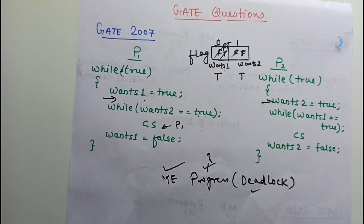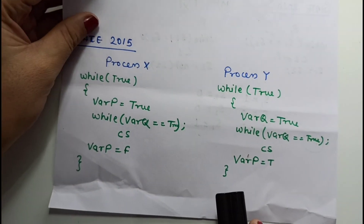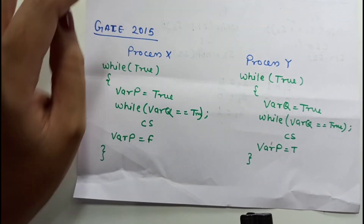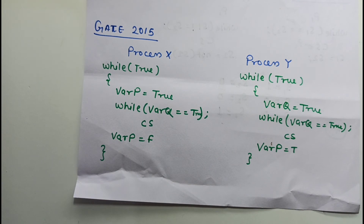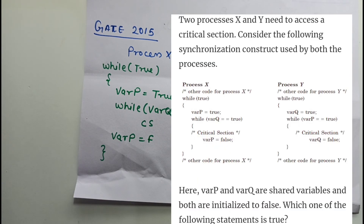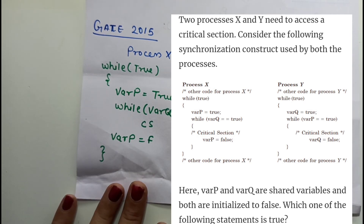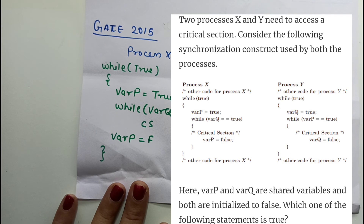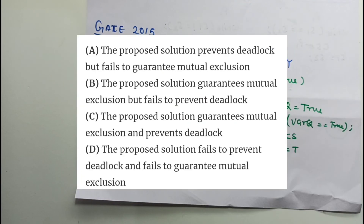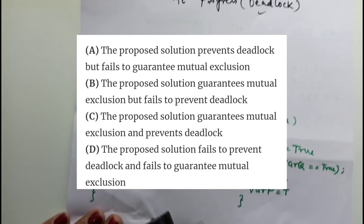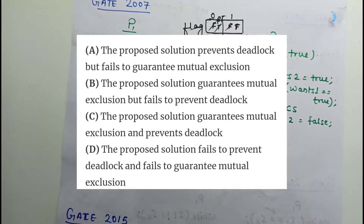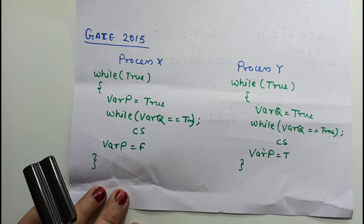The next question, asked in GATE 2015, is essentially the same question presented differently. There are also two processes — process X and process Y — with shared variables var p and var q, both initialized to false. The synchronization construct is used by both processes. Which one of the following statements is true? We solve it in the same way as before.